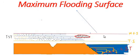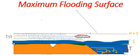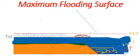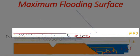When sea level rises to its maximum position, the marine surface is known as the maximum flooding surface.